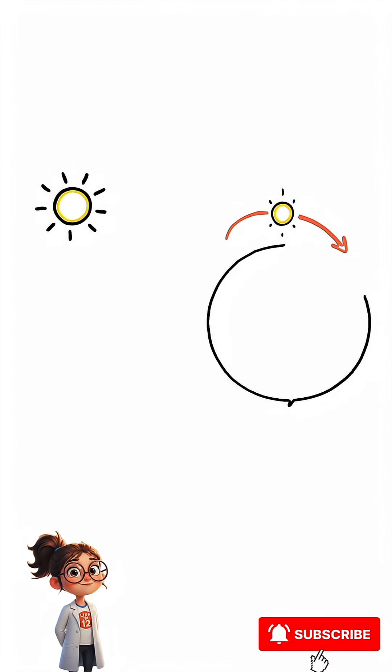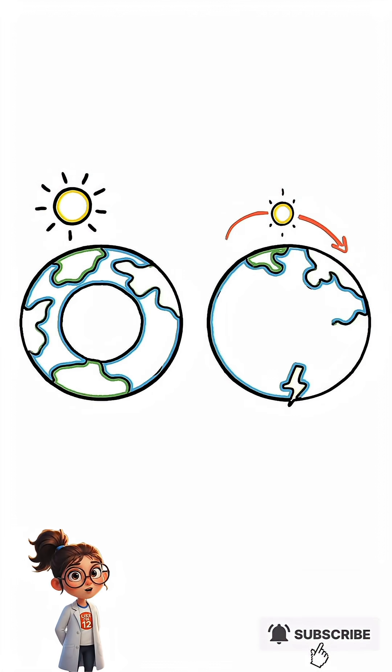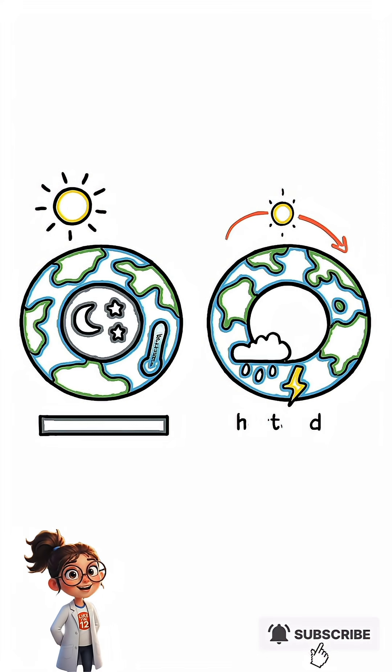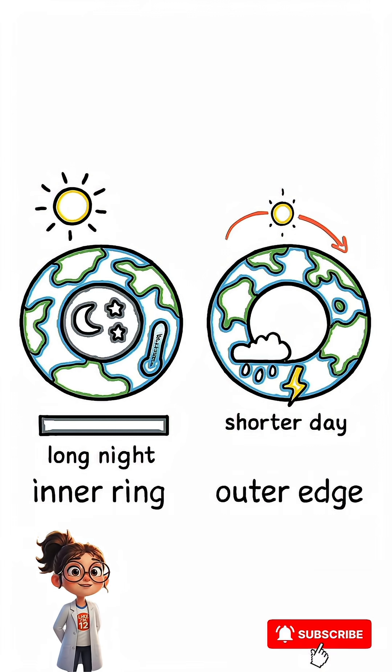Your days would be strange, too. The inner ring would be stuck in a long shadow, making it cooler with very long nights. The outer edge would have shorter days and crazy weather patterns.